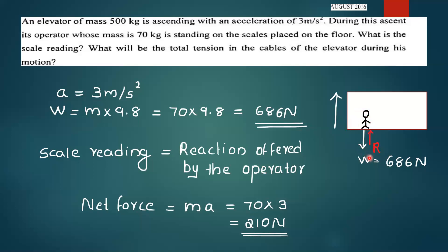The weight W equals mass into 9.8, that is 70 into 9.8, equal to 686 Newton. The scale reaction offered by the operator: net force equals M times a, which equals 70 into 3, equal to 210 Newton.